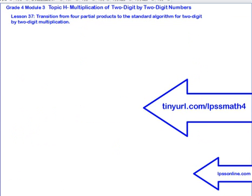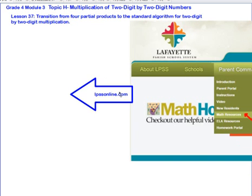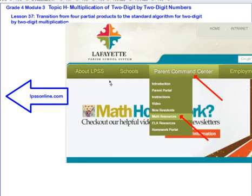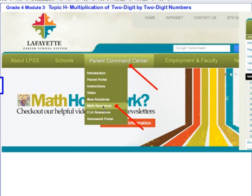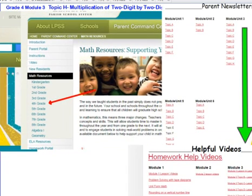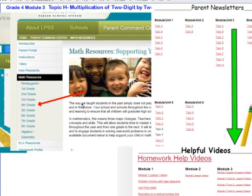That's going to take care of Lesson 37. We've been transitioning from four partial products to the standard algorithm for two-digit by two-digit multiplication. If you want to see the collection of all of the videos, you can go to tinyurl.com/lpssmath4. You can also go to lpssonline.com, go to Parent Command Center, scroll down to Math Resources, click on the grade level you want—in this case, we're working with fourth grade.